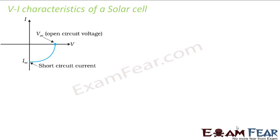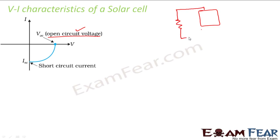Now let us look at the VI characteristics of a solar cell. The photo voltage is nothing but an open circuit voltage — no battery or voltage source is used, yet an EMF develops. This is known as open circuit voltage, and the current which flows through the circuit when an external load is connected is the short circuit current. So in a solar cell, open circuit voltage gives rise to a short circuit current. The solar cell does not operate under reverse bias.